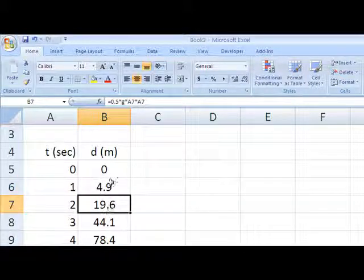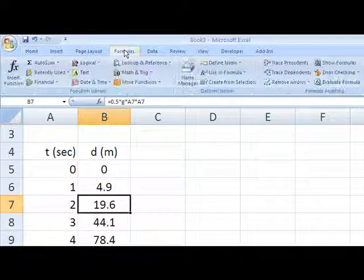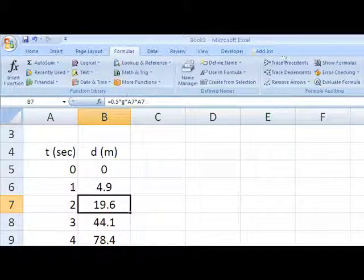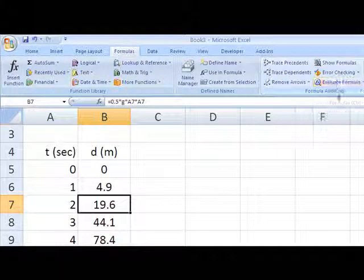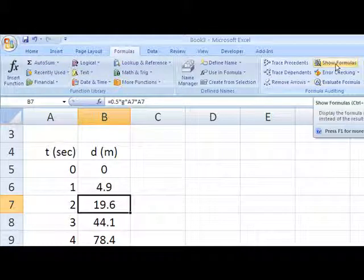The way to see the formulas everywhere on the spreadsheet where they appear is to click on the Formulas tab, and then over here near the right, under Formula Auditing, Show Formulas.